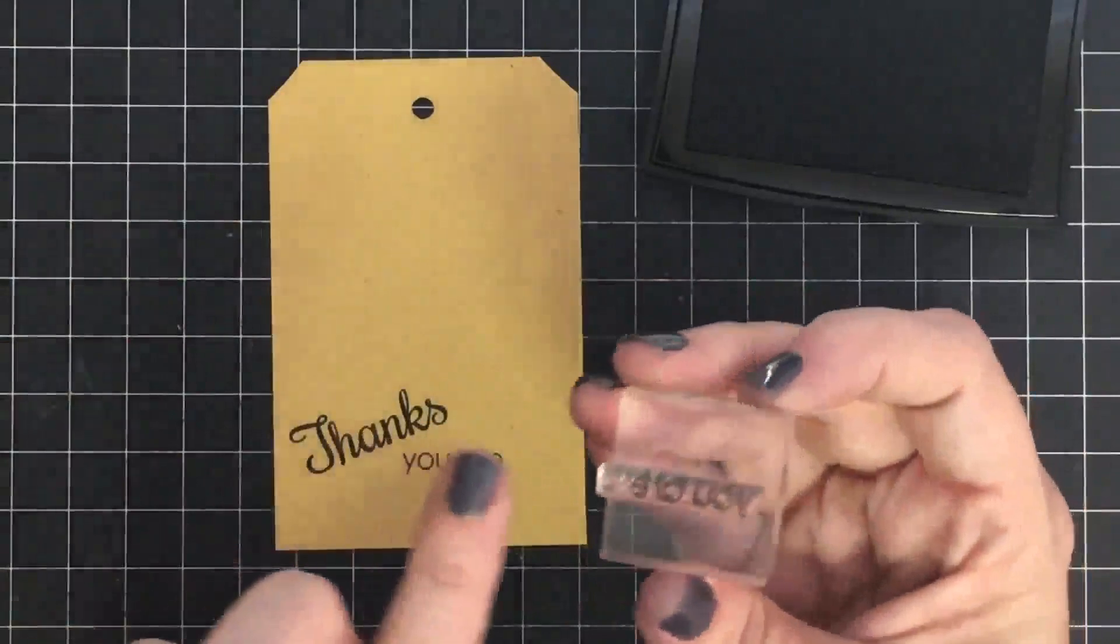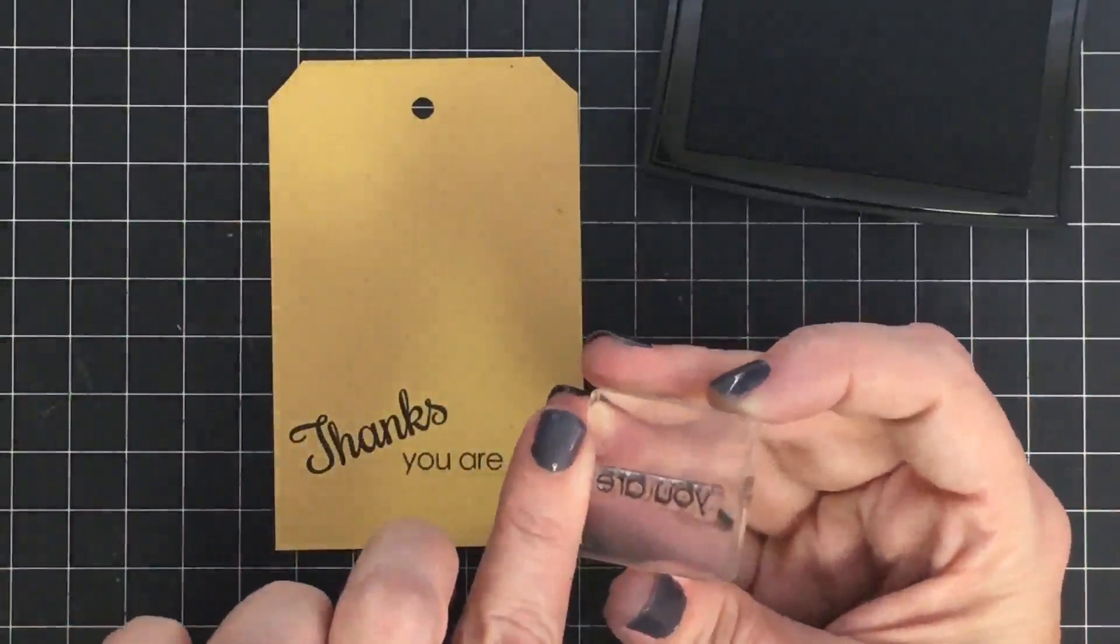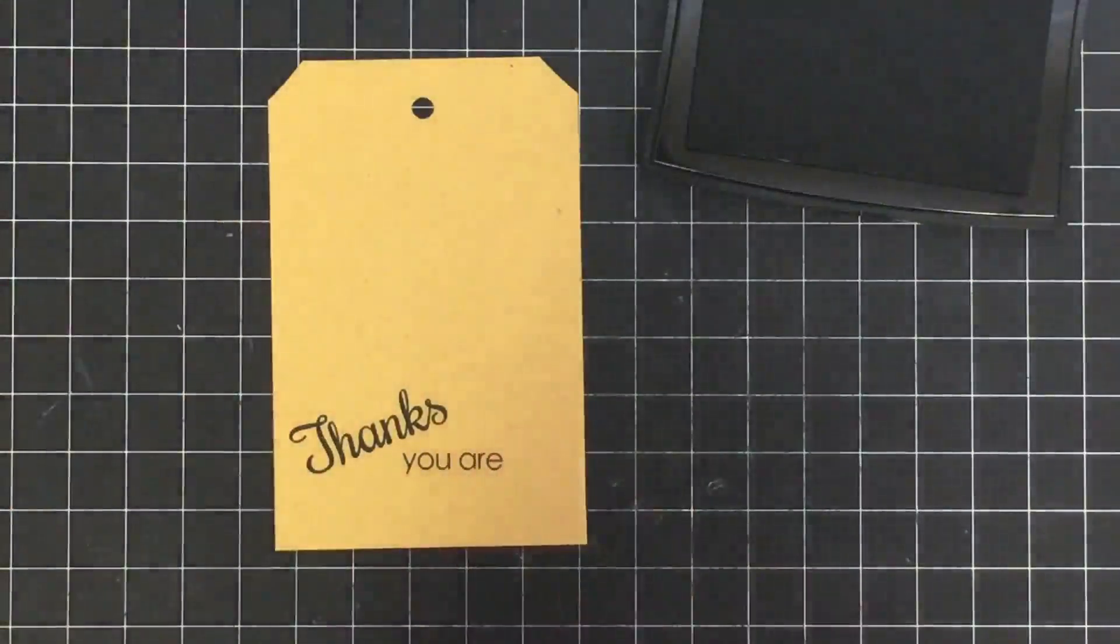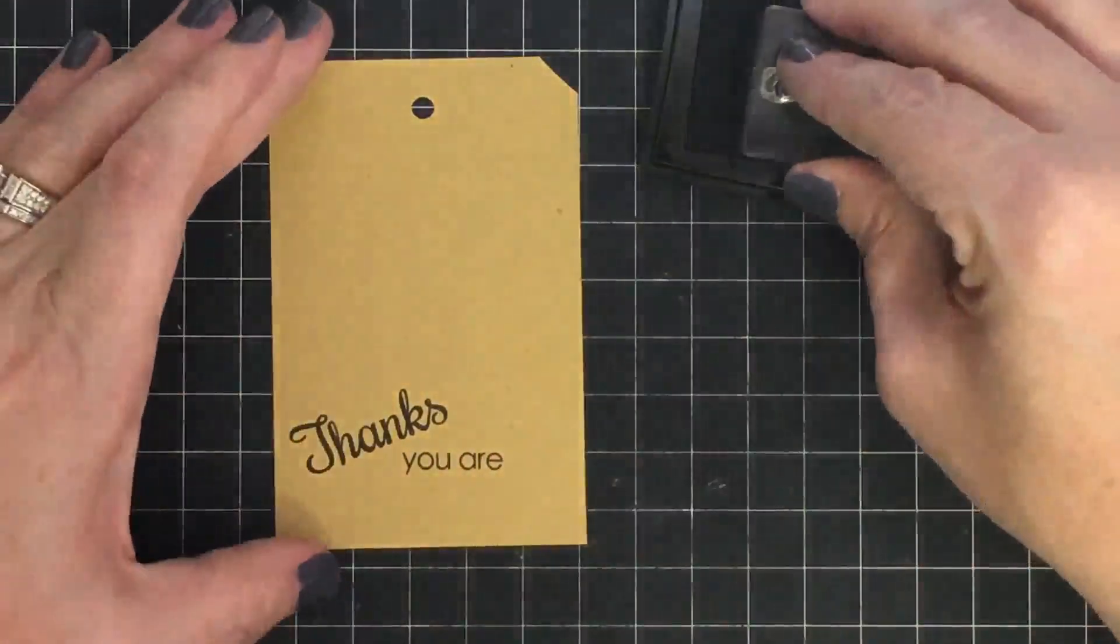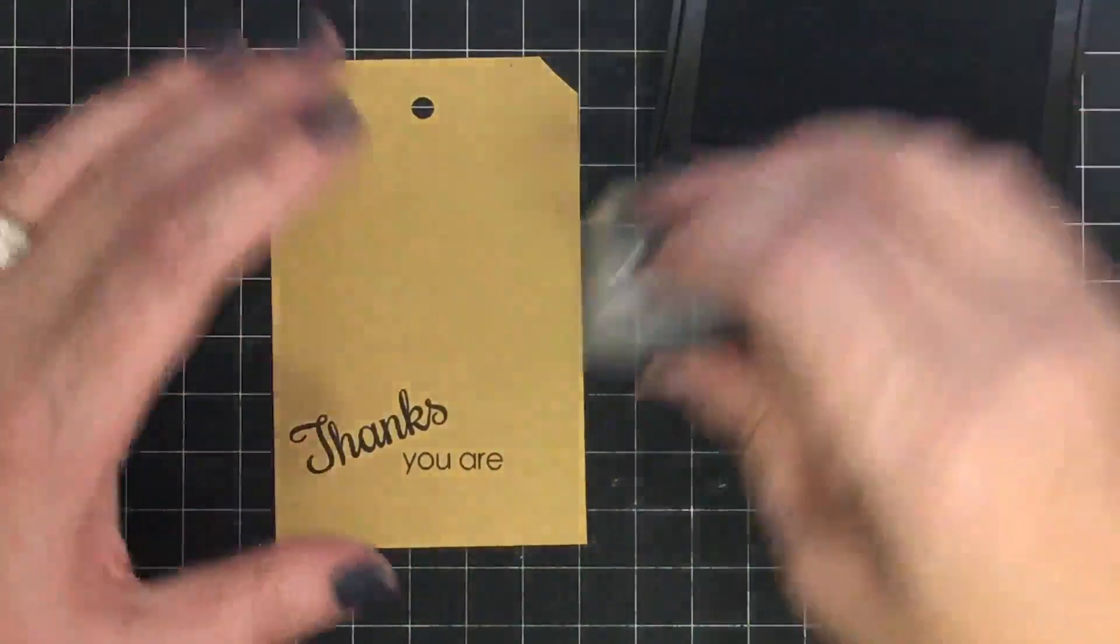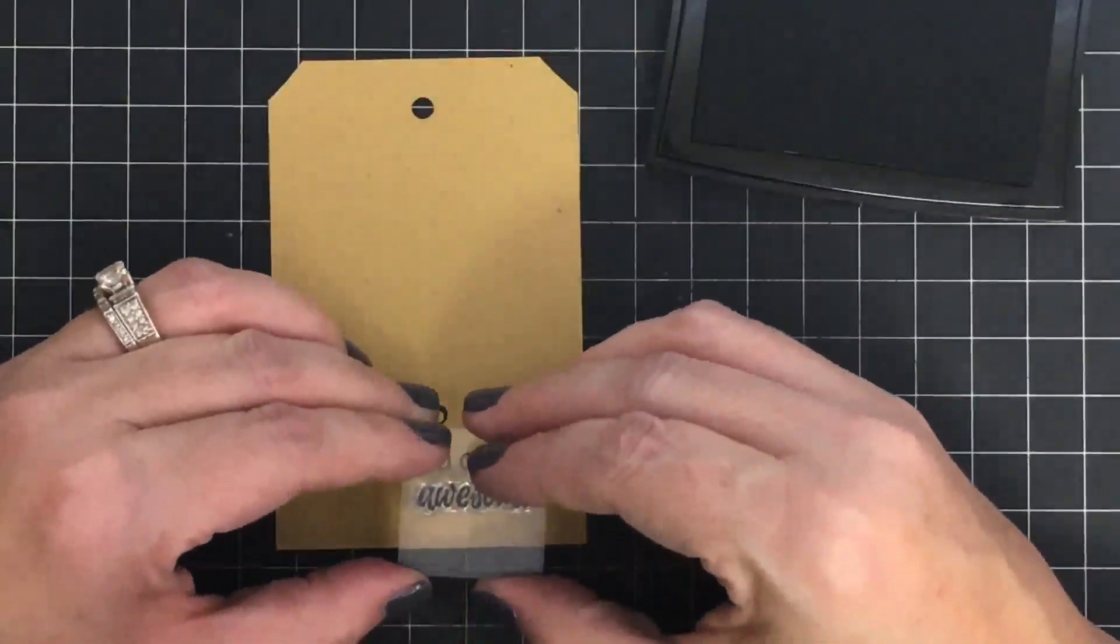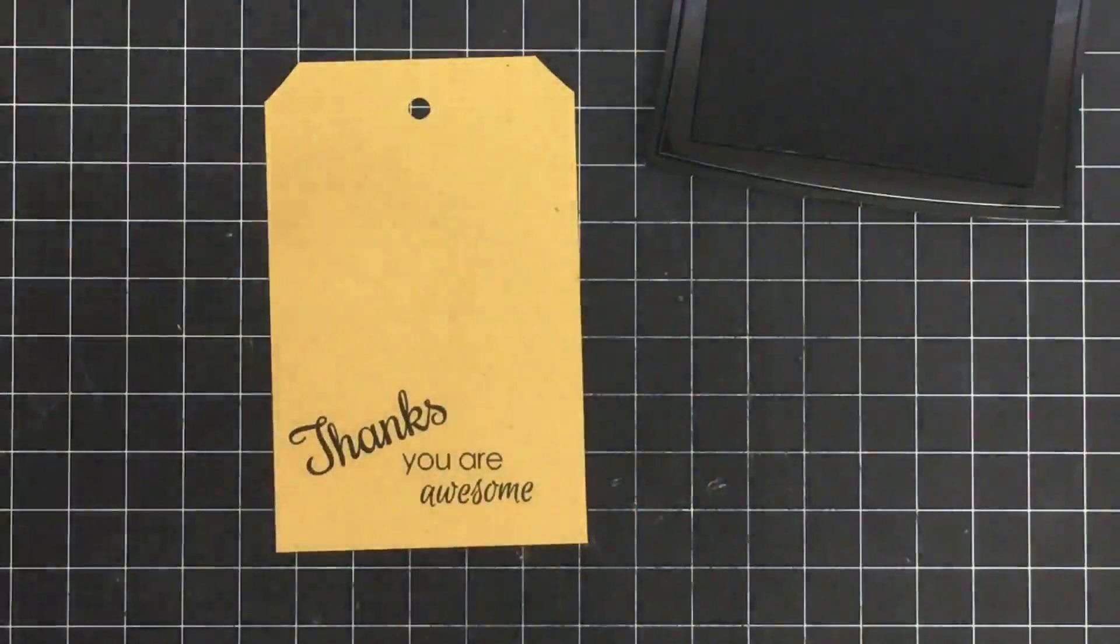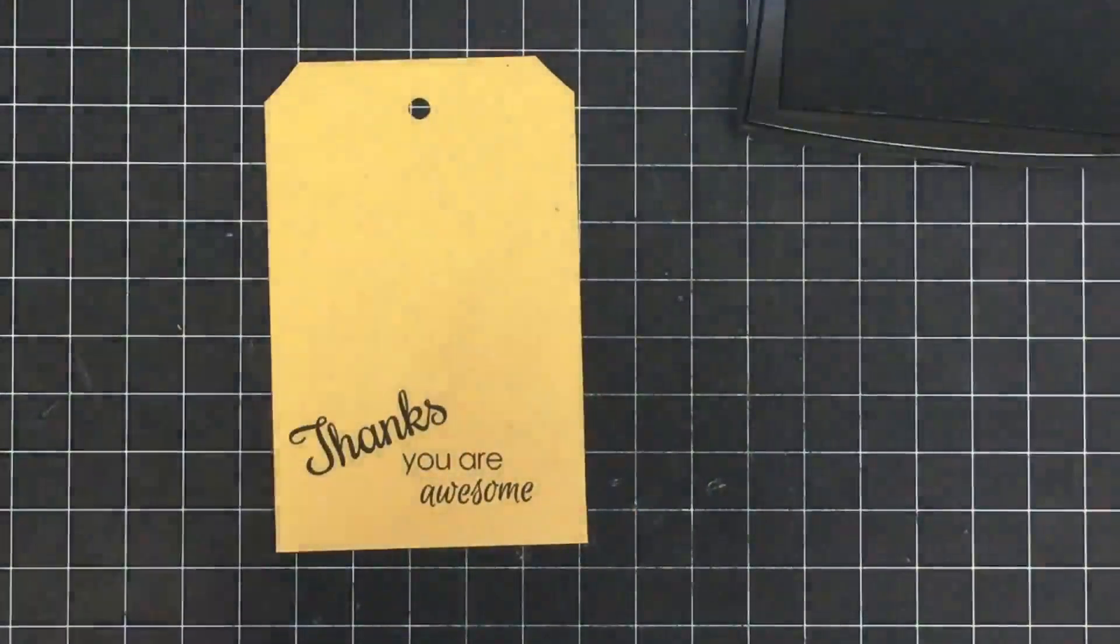So I'm gonna go thanks, you are, right here. You could use a piece of scotch tape and cover that up if you wanted to while you were inking it, but for me selective inking works pretty easy on some stamps. Sometimes it's a little more difficult. And from that same stamp set, the word awesome. So thanks, you are, and then awesome. I just think that's super cute and it works for anything that I want to say thanks for.